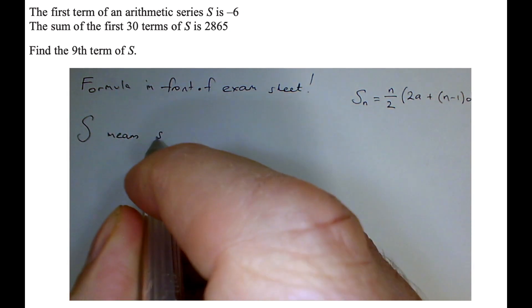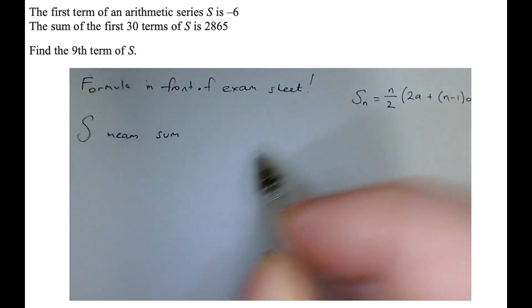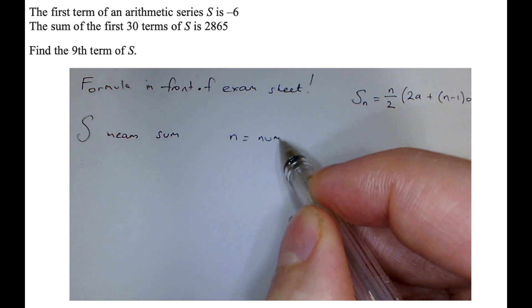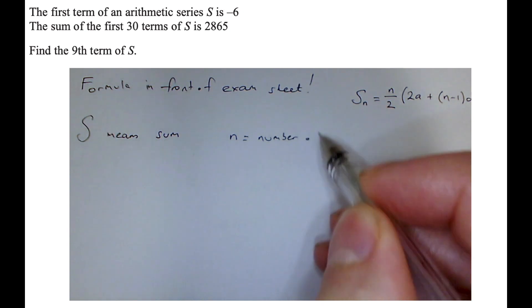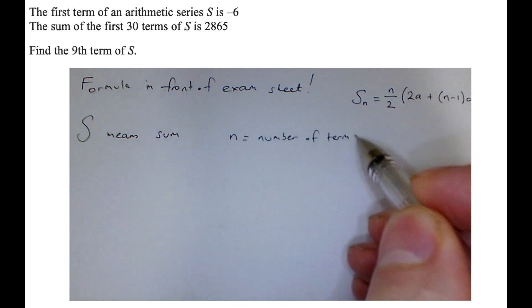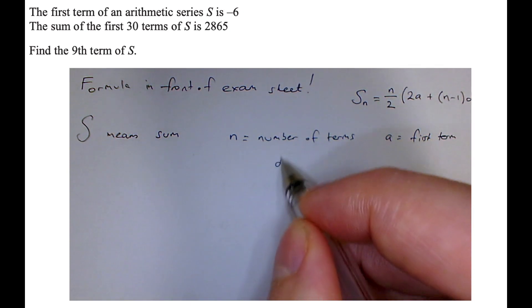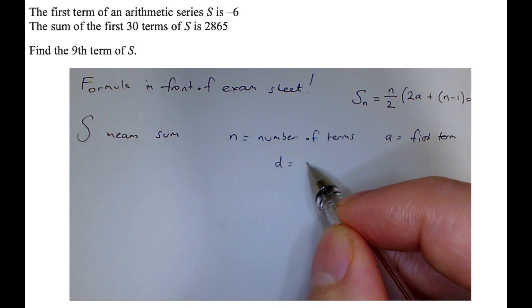So I'll write that down for you. S means sum, N means the number of terms, A is the first term, the first number in an arithmetic sequence, and D is the common difference, what we're adding on each time.